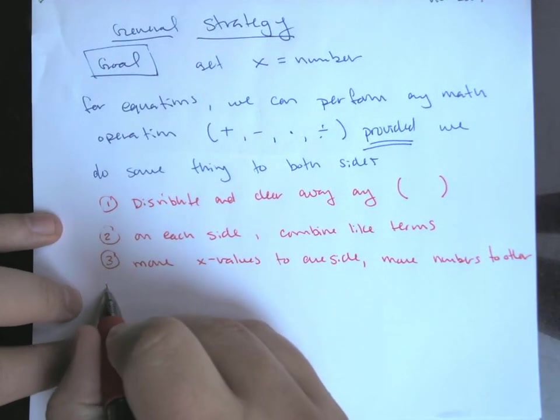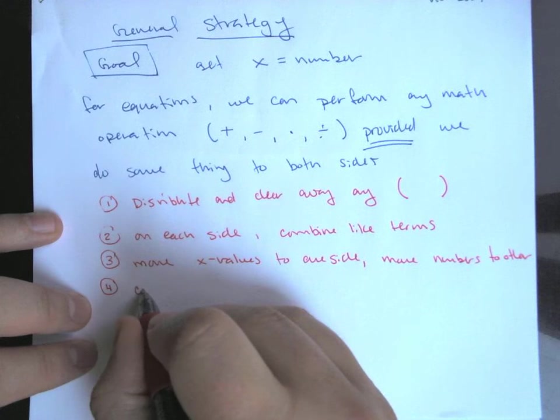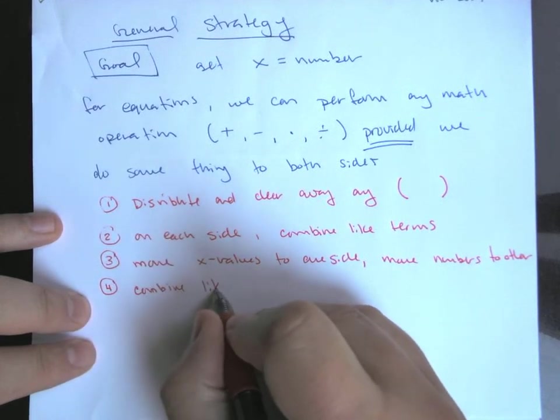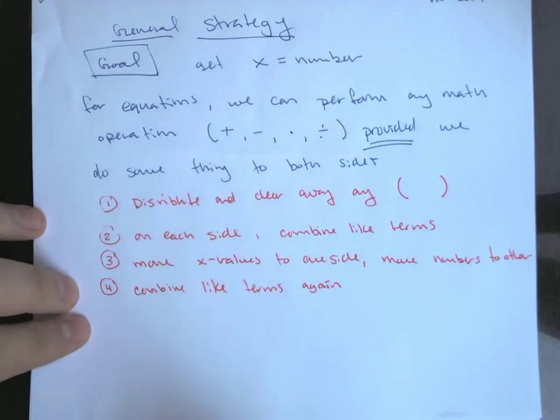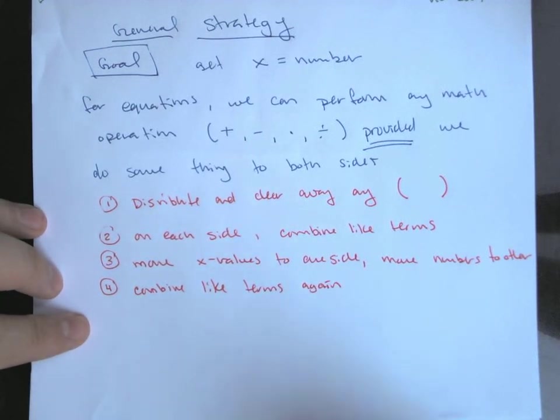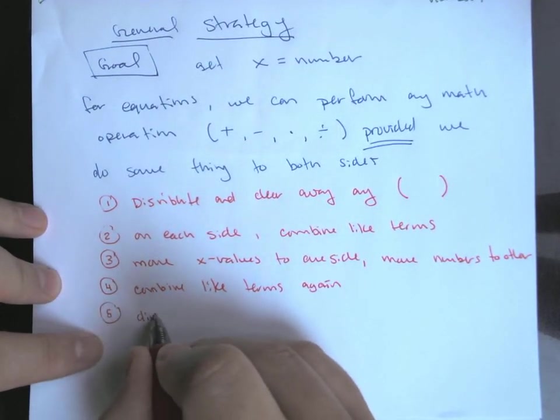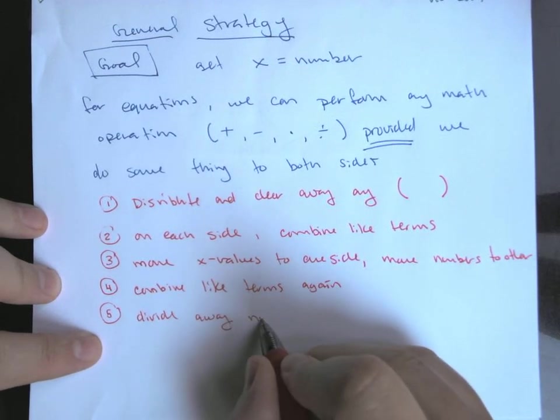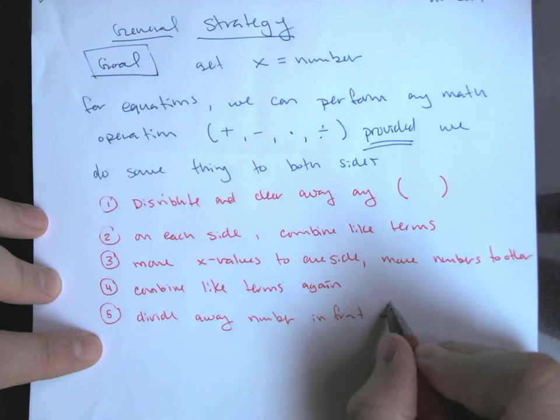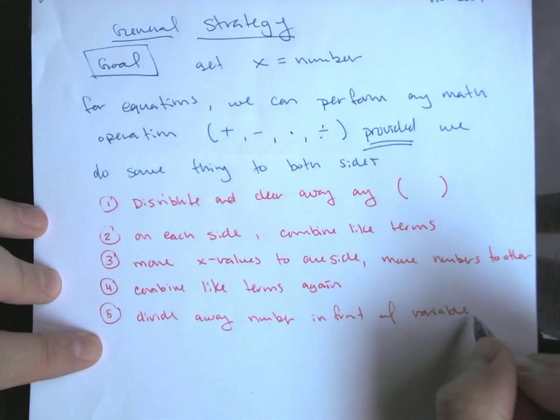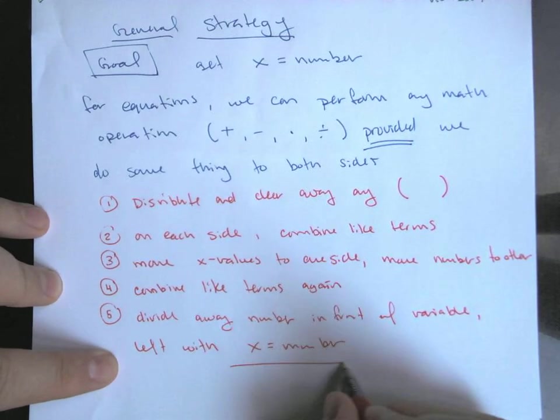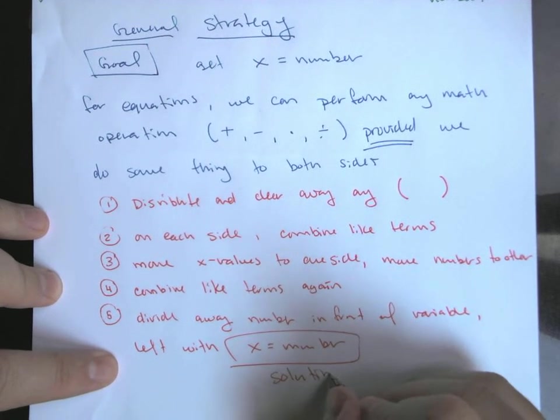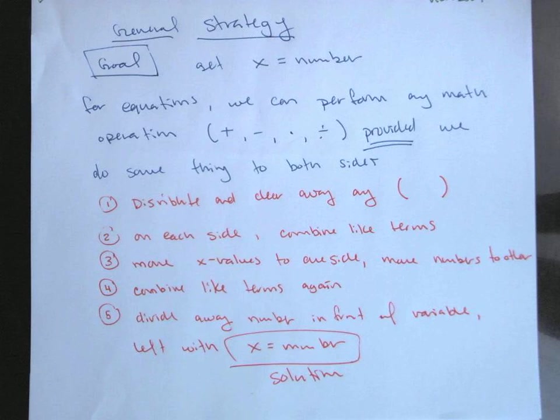So once we do that, once we get all of our variable terms on one side, the number terms, what we're going to do is combine like terms again. And so what you're going to end up with at that point is something X equals some number. Three X equals 27, negative six X equals 18, something like that. So your final step is divide away the number in front of your variable. And then you'd be left with X equals a number, you'd be left with your solution. So that's kind of our generic strategy.